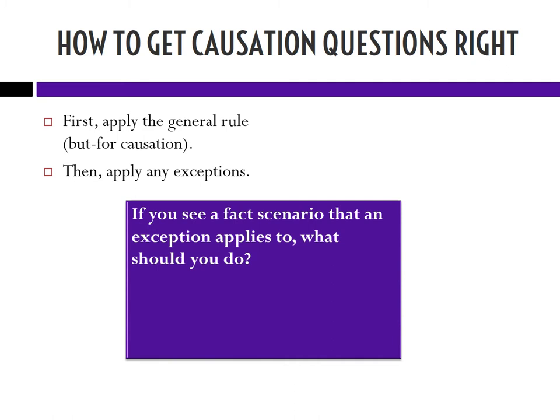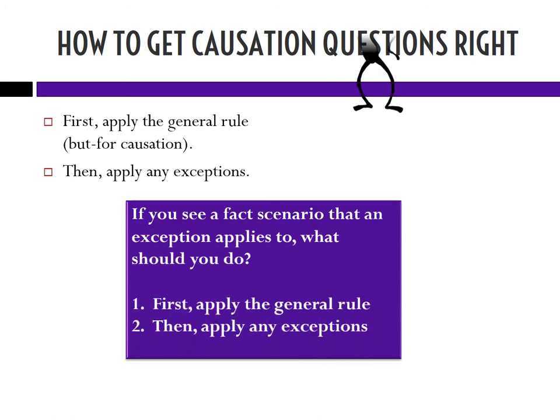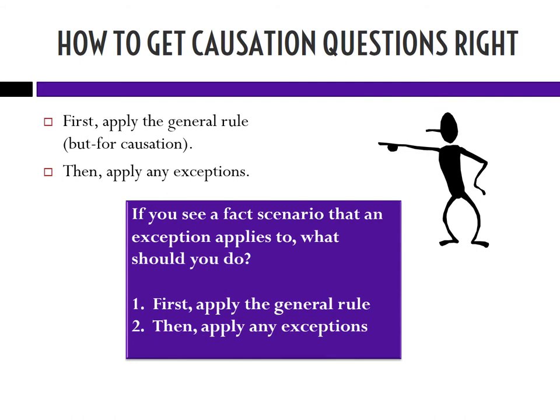So if you happen to see a fact scenario that looks like the substantial factor or alternate liability, you have to restrain yourself and say, wait, I'm going to do but-for causation first, because I'm going to win this thing. So we start with the general rule, which is but-for causation, before we move to any exceptions.